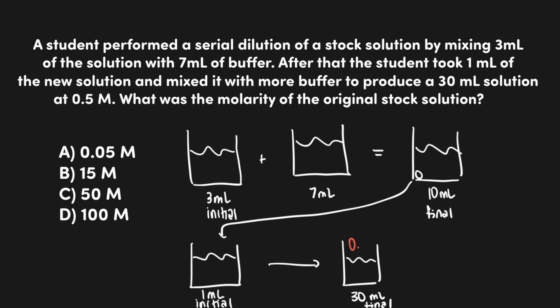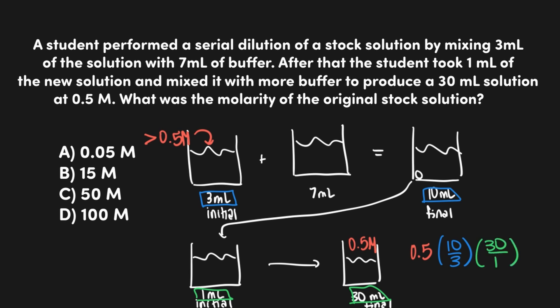The final concentration is 0.5 molar, and since the original solution was concentrated and underwent dilutions, the initial concentration must be higher. That means all of our fractions should be the larger of the two possible values. The first dilution (3 to 10) gives a fraction of 10 over 3. The second dilution (1 mL to 30 mL) gives a fraction of 30 over 1. So the calculation is: 0.5 times (10/3) times 30. The 3s cancel, leaving 0.5 times 10 times 10, which equals 50 molar. The initial concentrated solution was 50 molar — answer choice C.